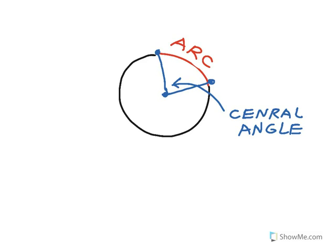An arc is an unbroken part of the circle. The red section here, bounded between two endpoints, is called an arc. If I draw two radii from those endpoints to the center of the circle, I form an angle with the vertex at the center of the circle, and I call that angle the central angle.